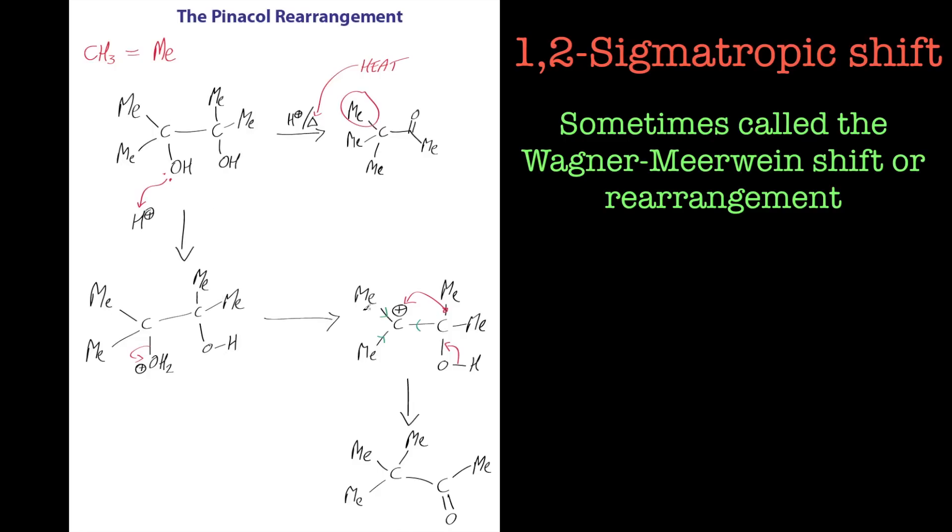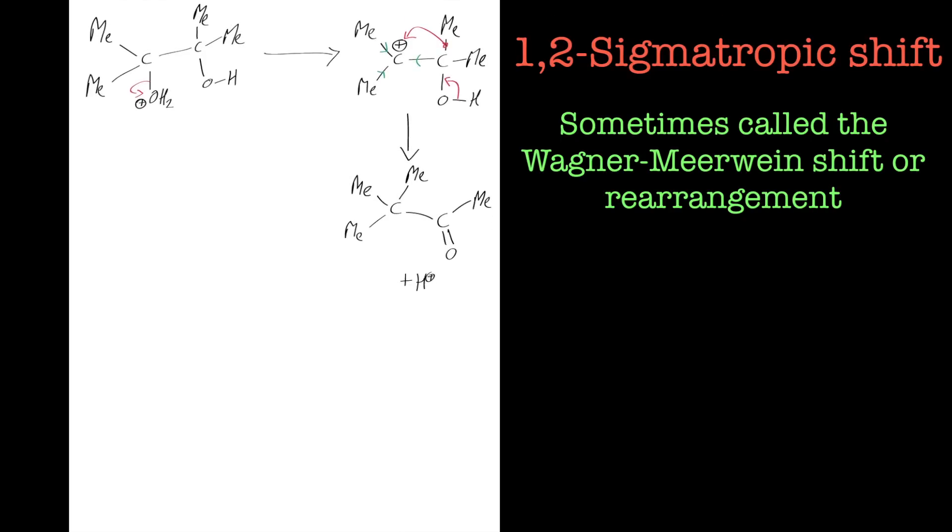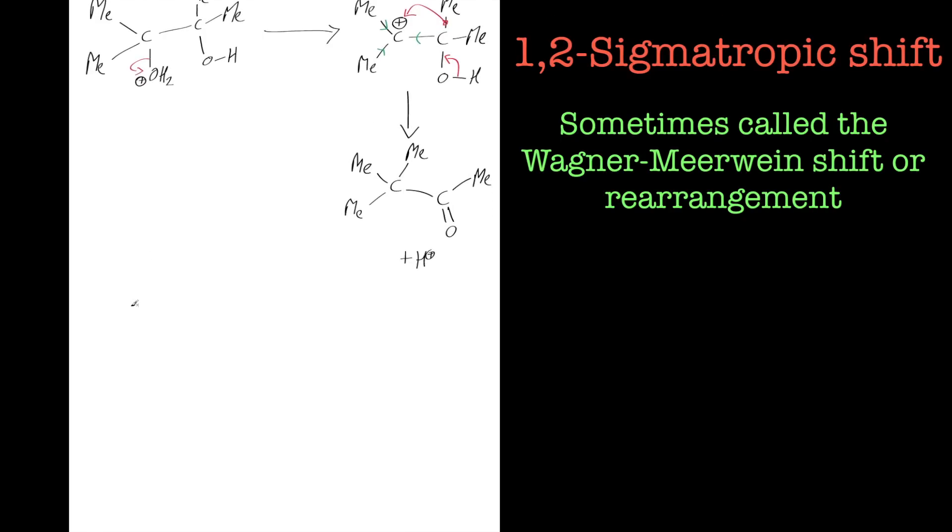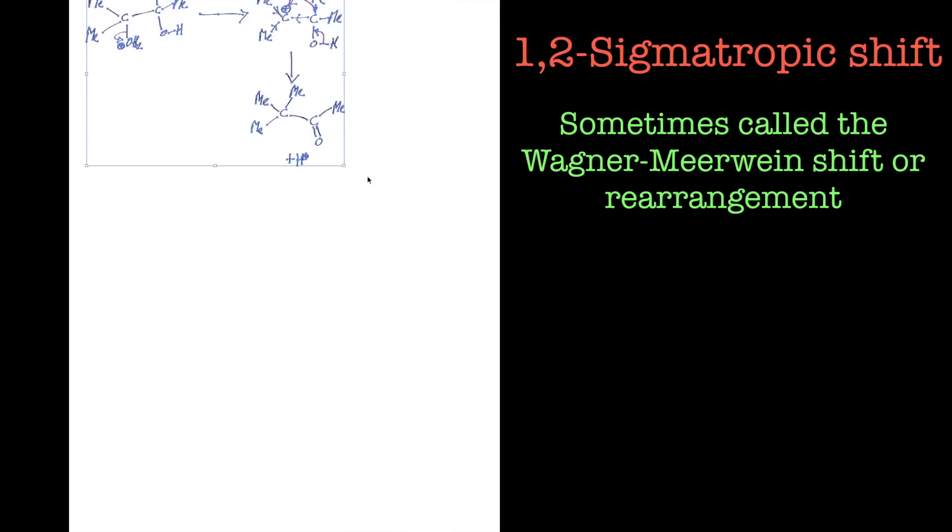The main reaction step is the migration of the methyl group there. That's it for now. In the next tutorial, we'll have a quick look at the migratory aptitude of the migrating group. Bye for now.